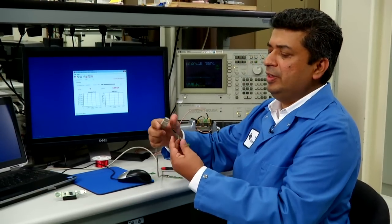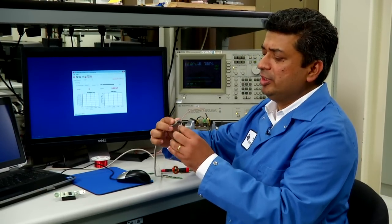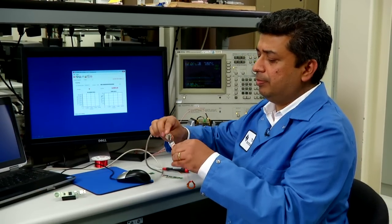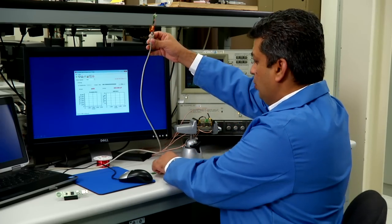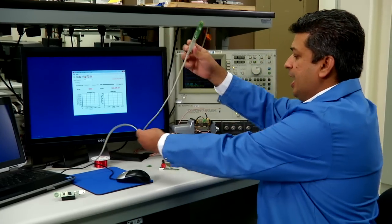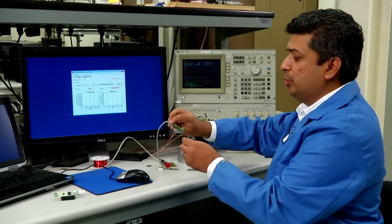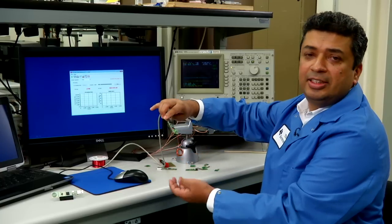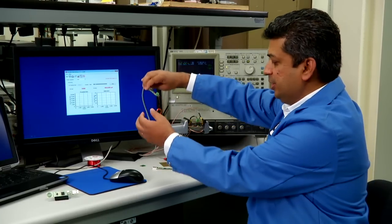Next I connect the EVM to the PC using this USB connector. And what needs to be done next is that we need to change a couple of registers to make sure that the LDC1000 can work with this discrete coil.